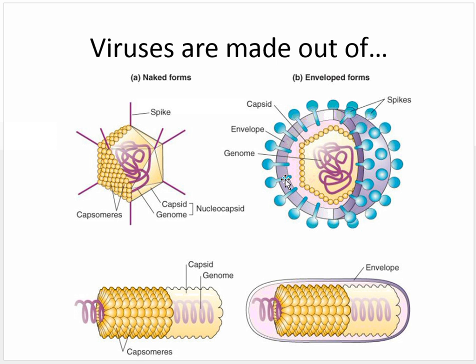Enveloped viruses can come as icosahedral or helical shapes. Whether or not a virus is enveloped makes a big difference for how we can prevent and treat it. Enveloped viruses are susceptible to hand sanitizer, but naked viruses are not damaged by alcohol-based hand sanitizers. This should remind you that just using hand sanitizer is not enough in a healthcare setting — you really need soap and water.